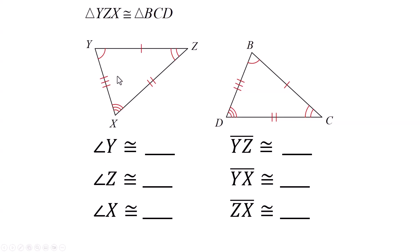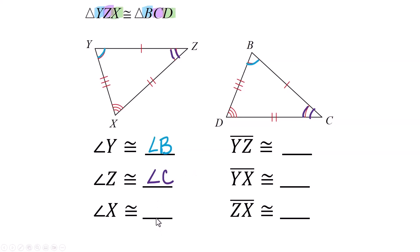Angle Y is congruent to angle B — you can get that right off the congruency statement, or off the diagram. Z goes to C, so that has to be angle C — it has two marks and the other has two marks, so we're right. And angle X has to be congruent to angle D — that's the way it's written, and we check the diagram and see that's correct.